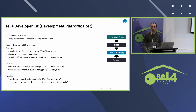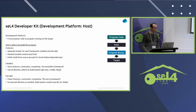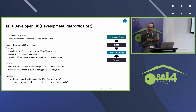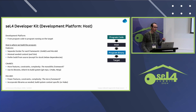The development platform is all the infrastructure you need to get from program code to something running on the target. The host is where we build the program. We use a separate Docker for the different frameworks — we support both CamKes and MicroKit, but we have a separate Docker for each because they have quite different dependencies. In practice, they're both built from different Debian starting points — CamKes has a slightly earlier Debian.